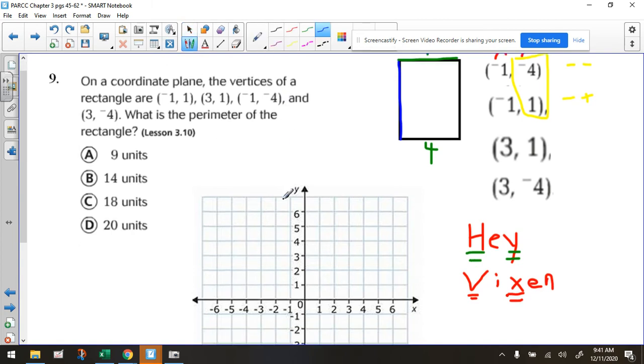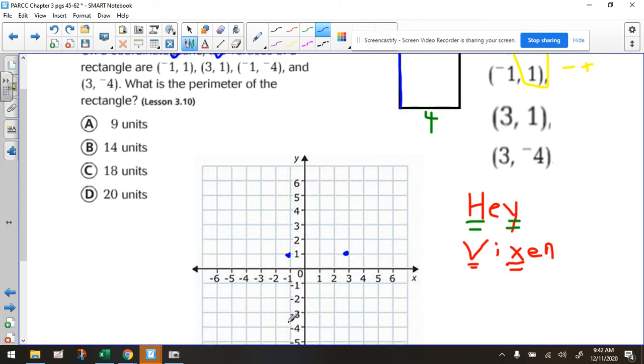we're going to go left 1, left 1, up 1, plot the point. So that's this one right here. Go over 3, up 1. Let's plot that point. That's here. Go left 1 and down 4, left 1, down 4. And then go over 3, over 3, down 4.